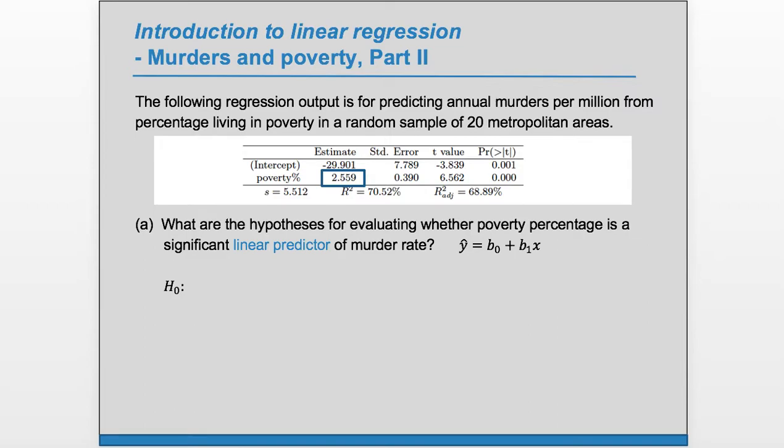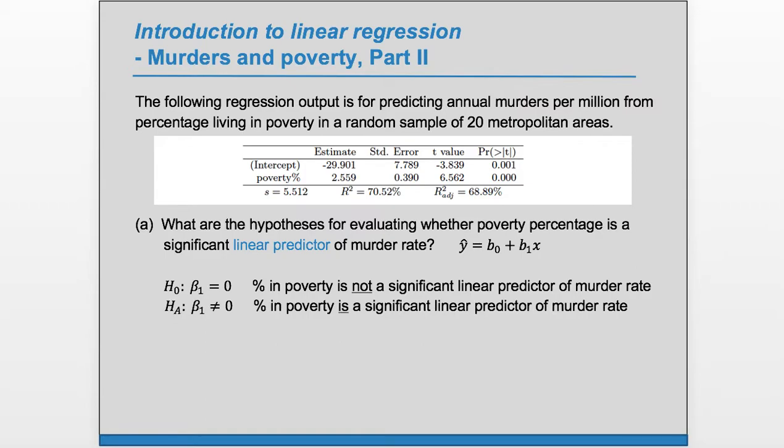Our null hypothesis is that beta1, the true slope, equals zero - that percent in poverty is not a significant linear predictor of murder rate. The alternate hypothesis is that beta1 is not equal to zero, that percent in poverty is a significant linear predictor of murder rate.